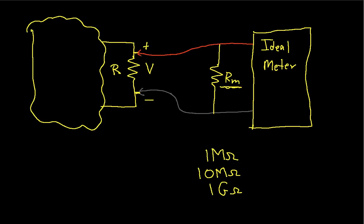And so what this means is that the rest of the circuit, this is the rest of the circuit, now instead of seeing a resistance of R, it sees the parallel combination of R and RM.